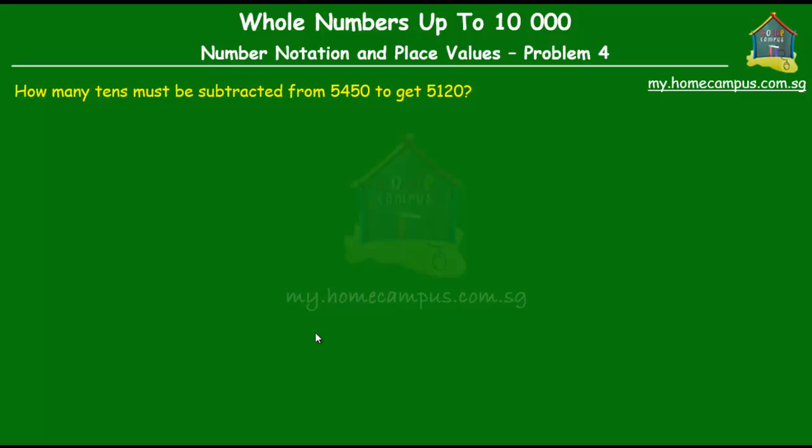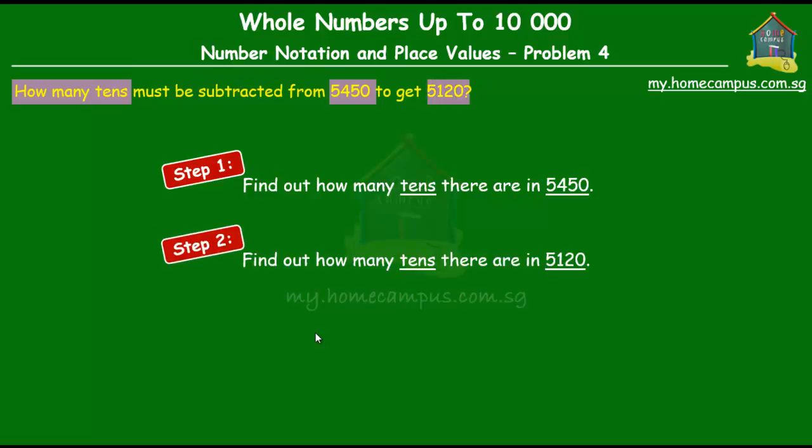This is a slightly tricky question in that it doesn't ask you to simply subtract the two numbers, but it asks you how many tens must be subtracted from the first number to get the second number. So, the steps to solving this problem is to first find out how many tens there are in 5420 and to find out how many tens there are in 5120 and then subtract the two to get the answer.